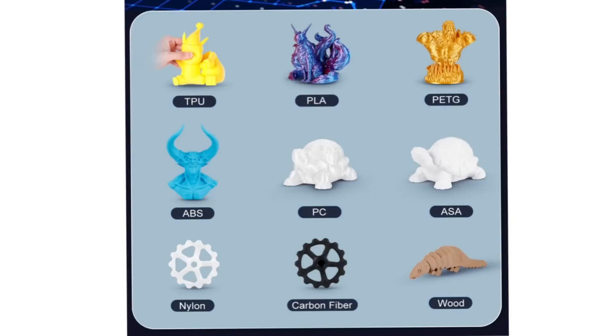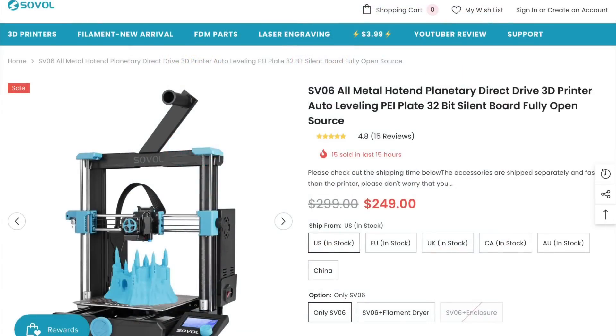Because of the high temperature hotend this printer can print all kinds of materials including PETG that I want to use in this project. And you can get this printer direct from Solval for $249. I'll put a link to it in the description below.